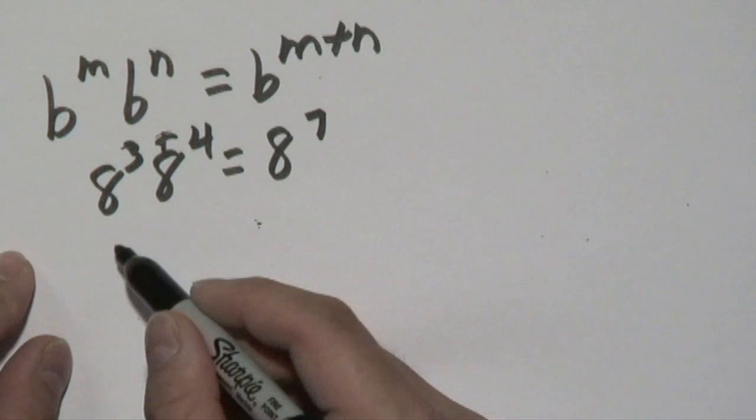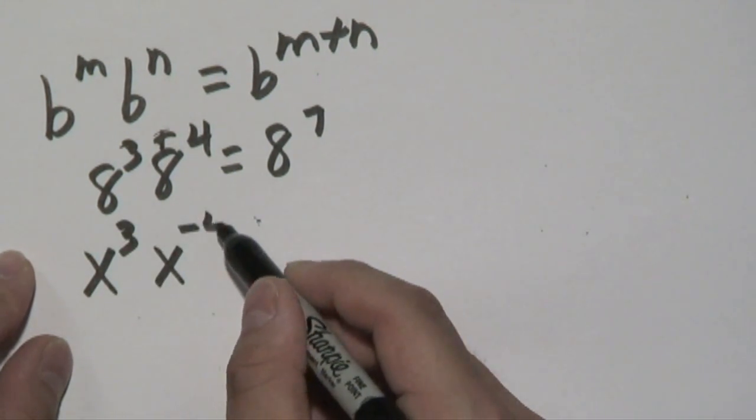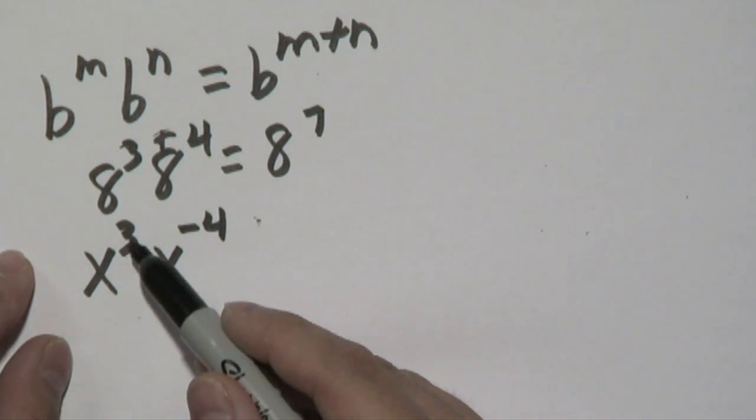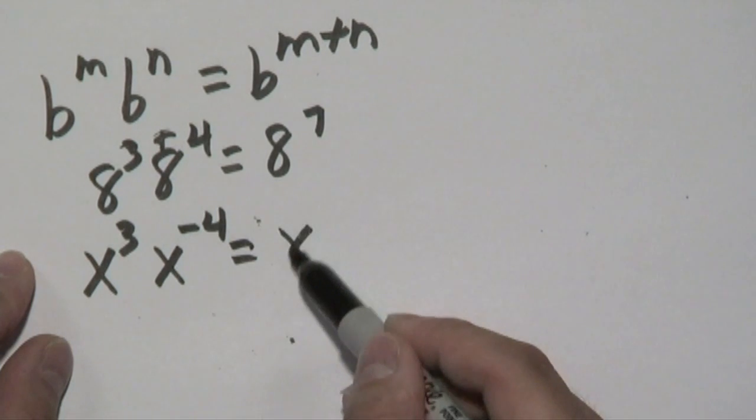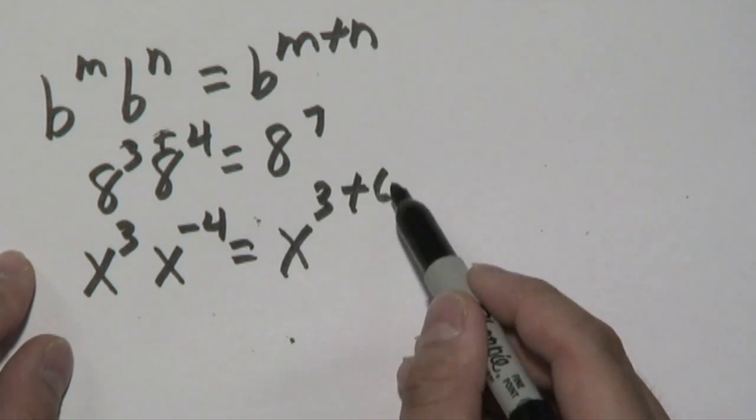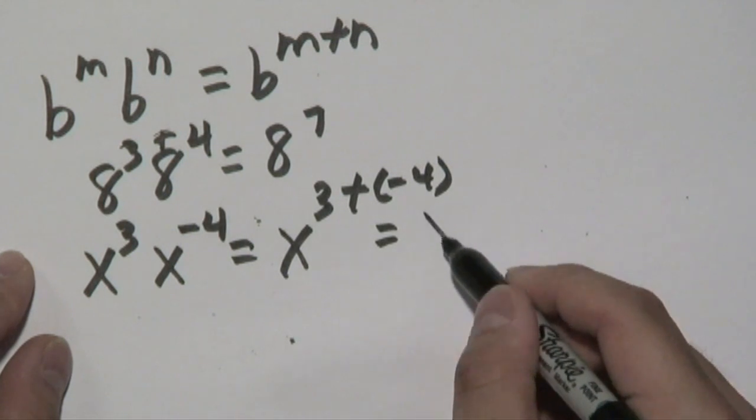Now, if you have x to the third times x to the negative 4, it's the same kind of idea even though you have a positive and a negative exponent. As long as the bases match, you can have x to the 3 plus negative 4. As you know, 3 plus negative 4 is like subtracting. It would be x to the negative 1.